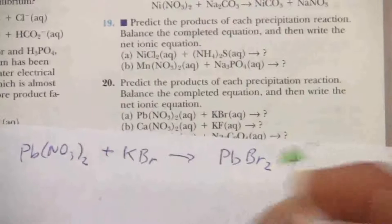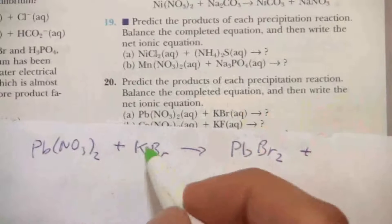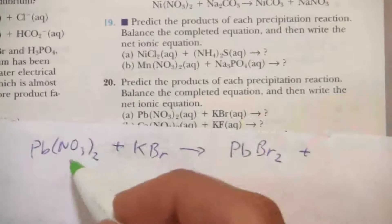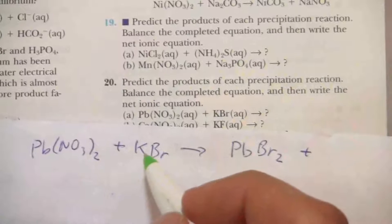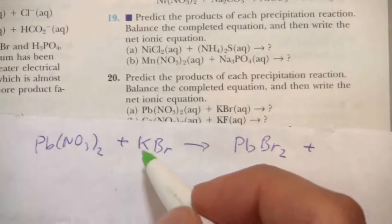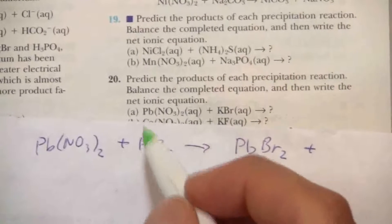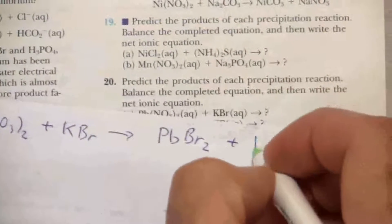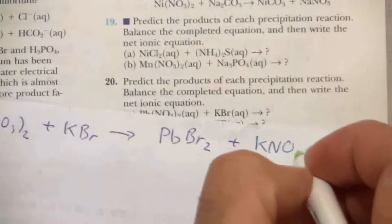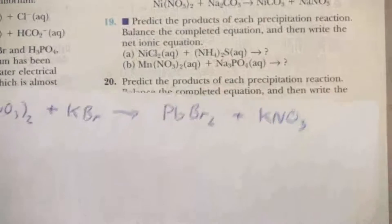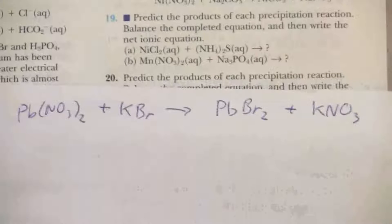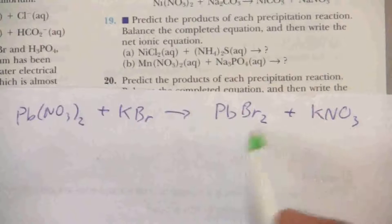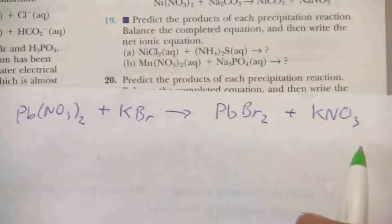And then the other one will be potassium nitrate. Potassium is an alkali metal. It has a positive one charge. That's the first group. Nitrate has a negative one. So those go together one to one, KNO3. All right, so those are the products, lead bromide and potassium nitrate.